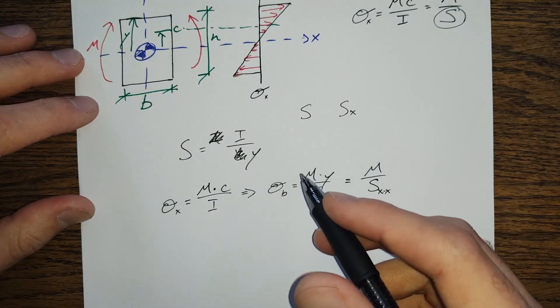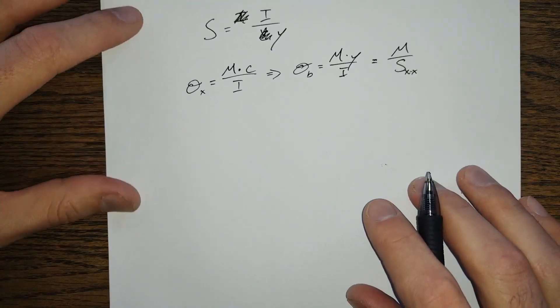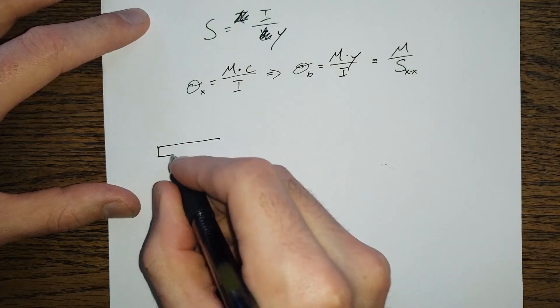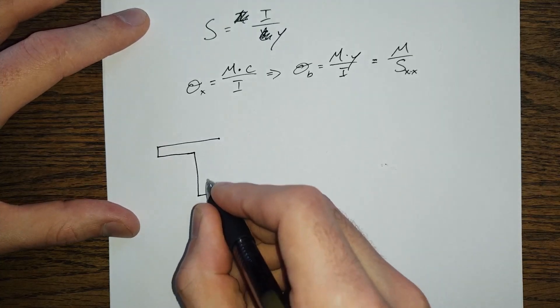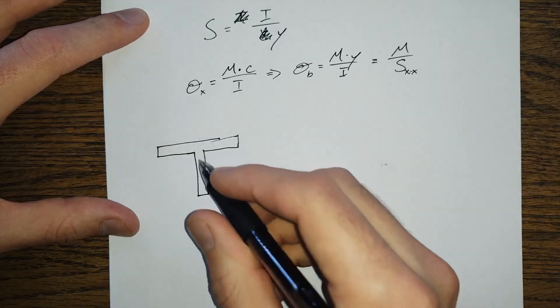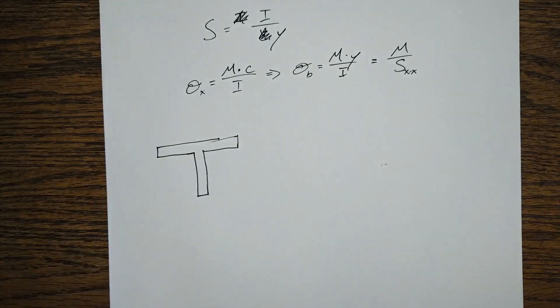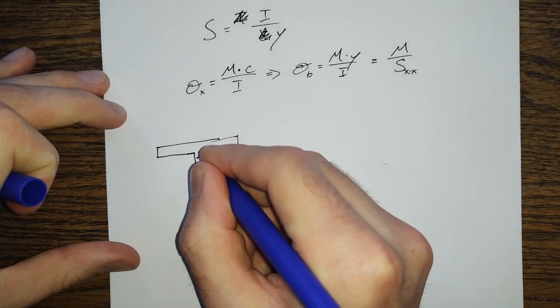But we could very easily have a situation where we have an asymmetric section like this, and the neutral axis is located somewhere up in here.